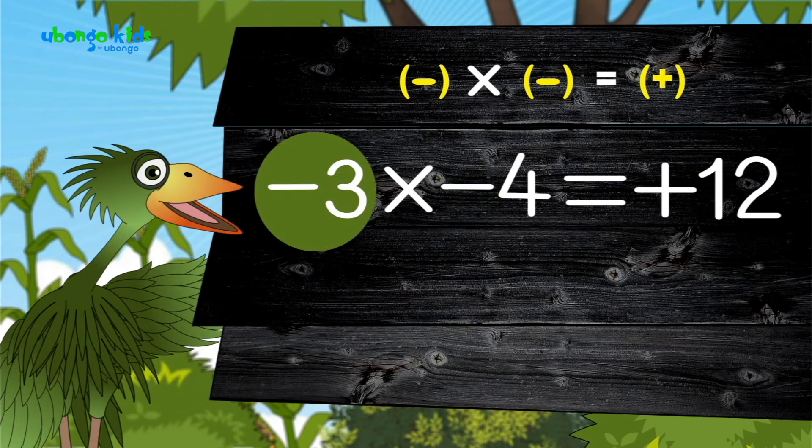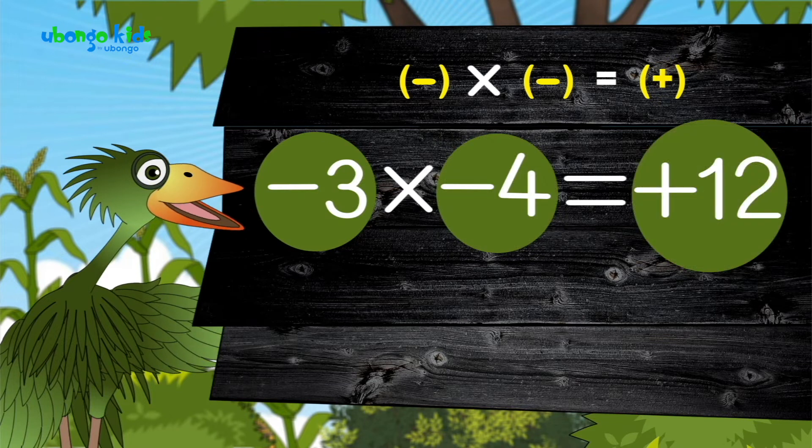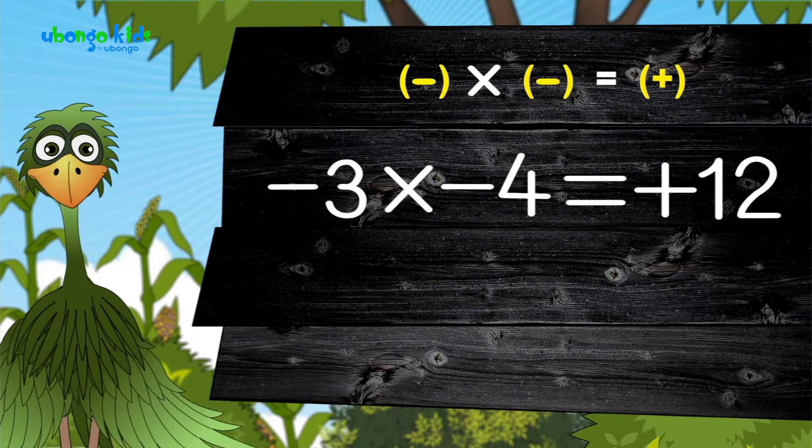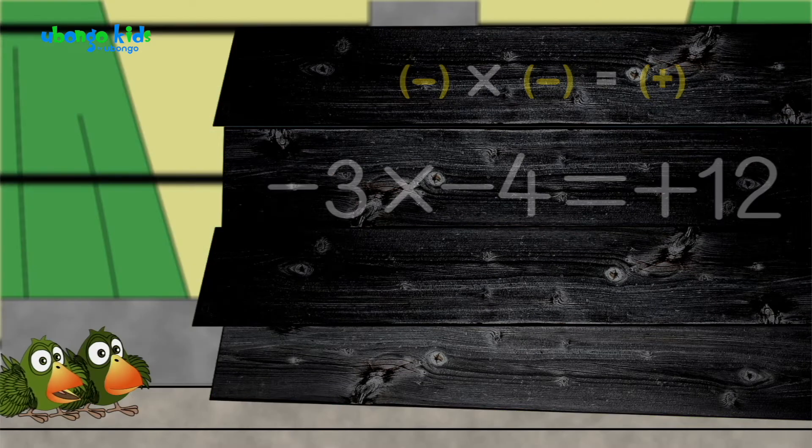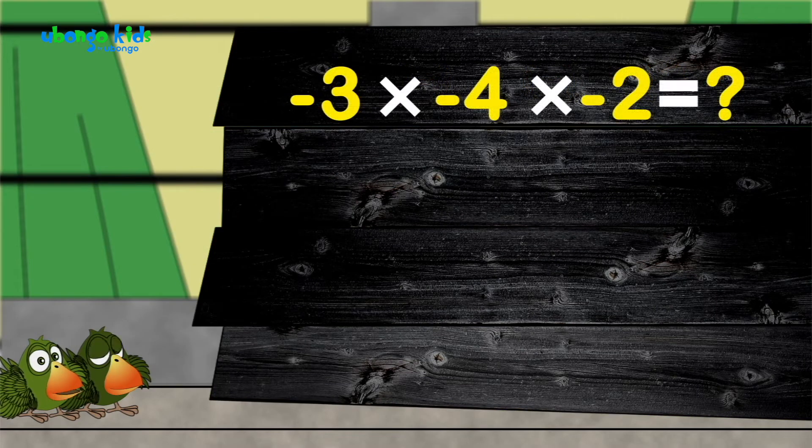So, negative three times negative four is positive twelve. That's right. It's positive twelve. So then, what's negative three times negative four times negative two?